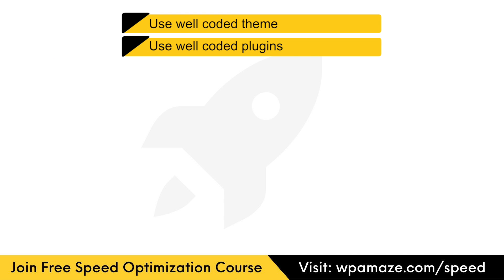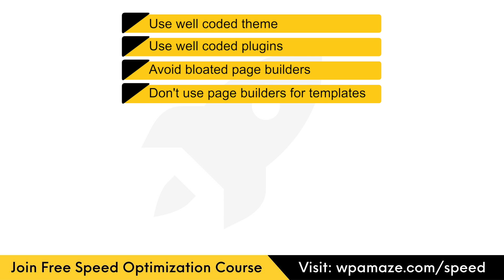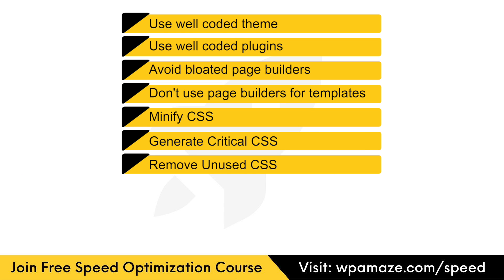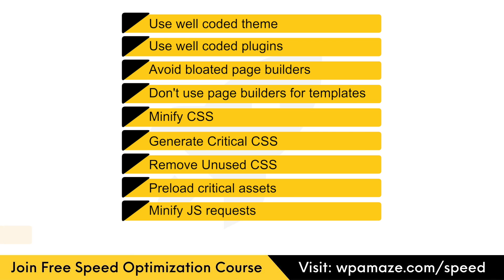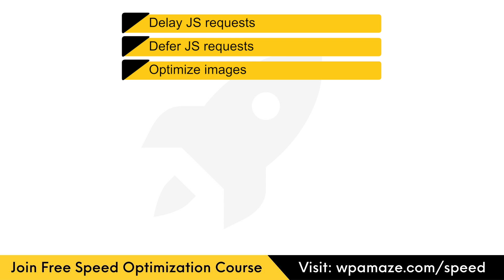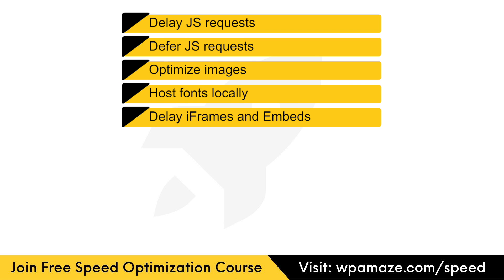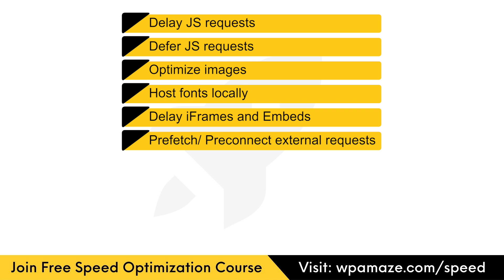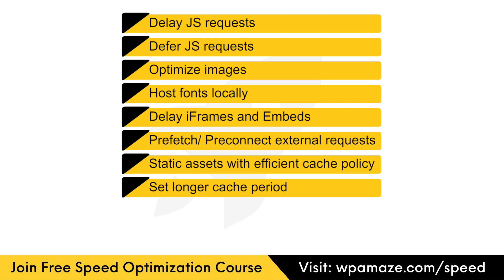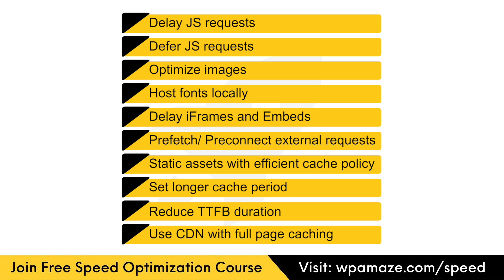Use a well-coded theme. Use well-coded plugins. Avoid using bloated page builders. Don't use page builders to create headers, footers, and sidebars. Minify CSS. Generate critical CSS. Remove unused CSS. Preload critical requests. Minify JavaScript. Offload unwanted JavaScript. Delay JavaScript files. Defer JavaScript. Optimize images. Use system fonts or host fonts locally and add the swap attribute. Delay iframes and embeds. Pre-fetch or pre-connect external requests. Serve static assets with an efficient cache policy and set a longer cache duration. Reduce TTFB duration. Use a CDN that supports full-page caching.